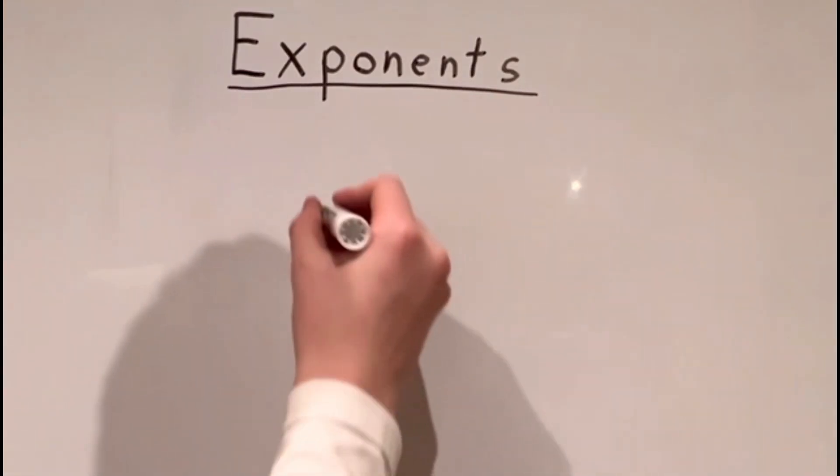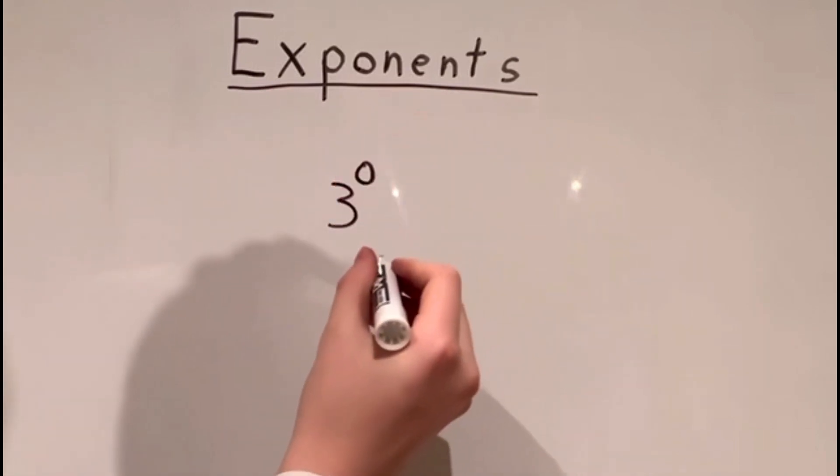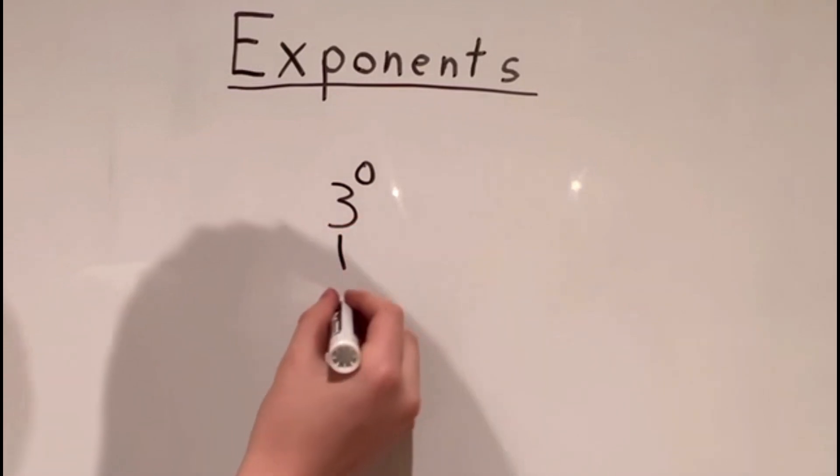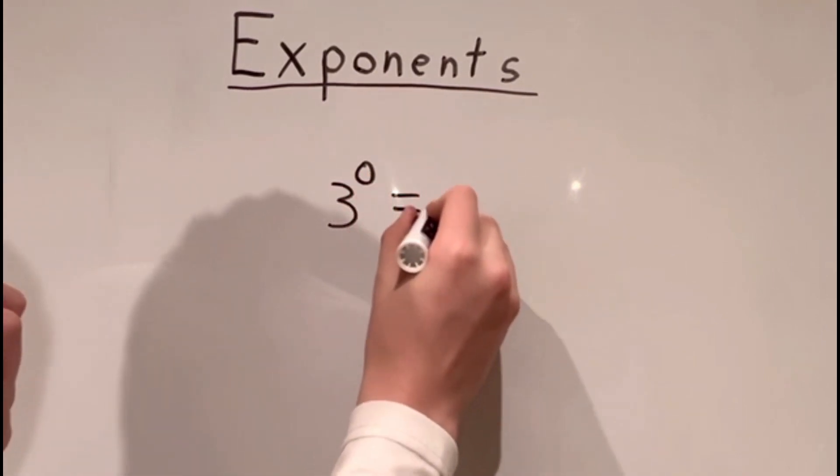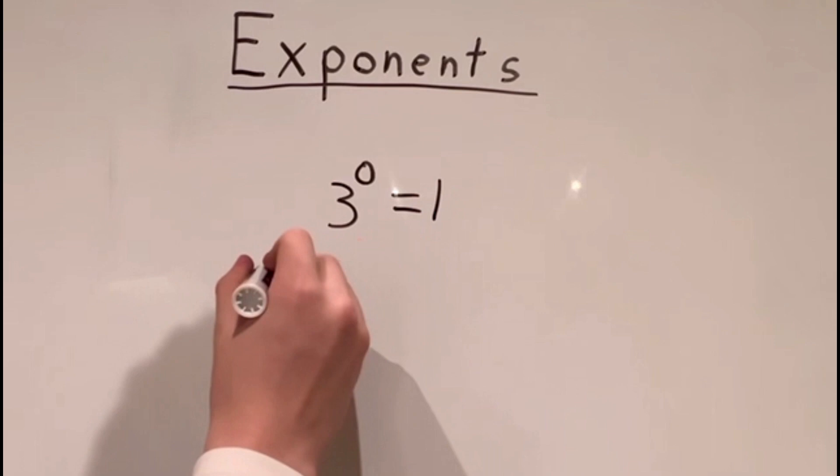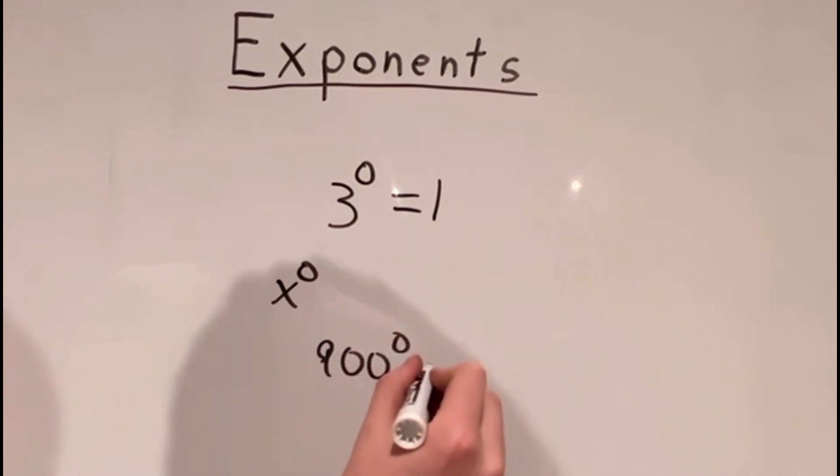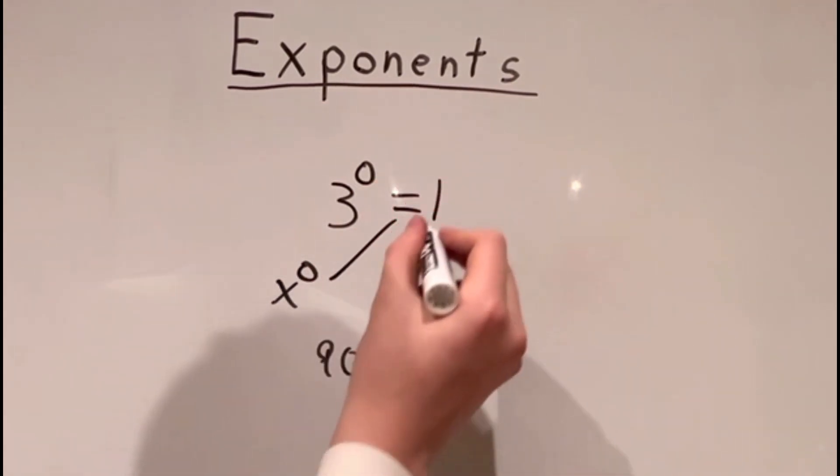Now let me show you another rule. Let's try 3 to the power of 0. We need to have 0 threes. Well, we can't have 0 threes. Anything to the power of 0 is just 1. It could be 1, it could be x to the power of 0, 900 to the power of 0. No matter what, it's always going to equal 1.